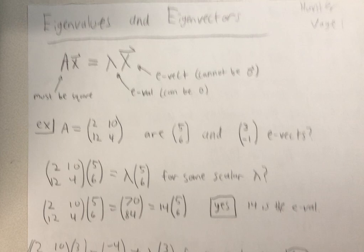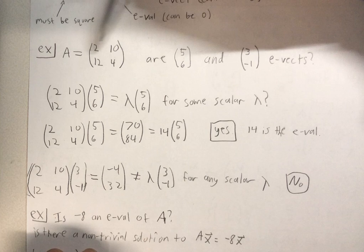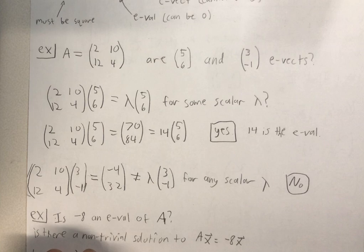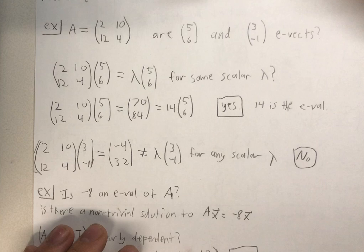So that's what those are. Let's do an example. For A equals 2, 10, 12, 4 are 5, 6, and 3, negative 1 eigenvectors. So to check this, we just plug this stuff into this equation here.